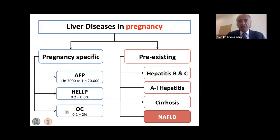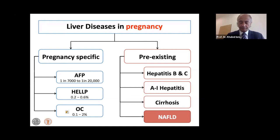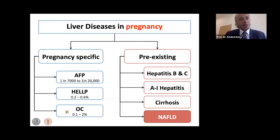Pre-existing liver cirrhosis is something we don't see much of because most women who have cirrhosis will have difficulty getting pregnant. And last but not least — the focus of this talk — is NAFLD. Interestingly, if you ask obstetricians about liver diseases in pregnancy, very few will even mention NAFLD. There is guidance from the RCOG about HELLP syndrome and obstetric cholestasis, lots of information about hepatitis B and C, but nothing really about NAFLD — and I don't know why we don't think about it or why there are no national guidelines about it.